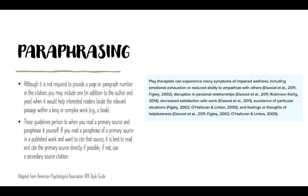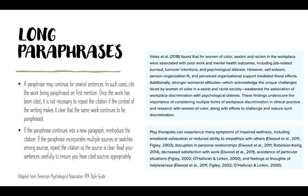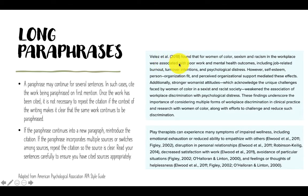These guidelines are for citations using primary sources. For long paraphrases, if the entire paragraph is referring to a single author's work — for example, Veles 2018 — because they only cited a single author. So if you have a longer paragraph and you are still referring to Veles et al., then you would need to re-cite Veles in the second paragraph.